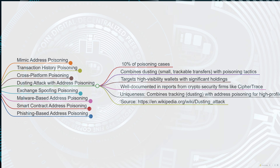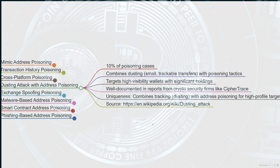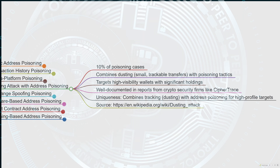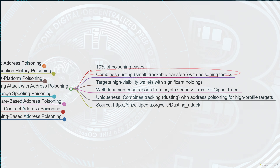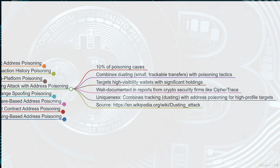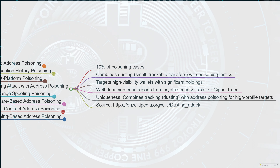There is also dusting attacks combined with address poisoning, making up around 10% of total address poisoning incidents. A CypherTrace report notes these combined tactics are more effective against wallets with higher visibility on the blockchain, such as those with significant holdings or transactional frequency. Dusting attacks send small amounts of crypto dust to random addresses to track wallet activity or de-anonymize users. When combined with address poisoning, scammers send dust from a lookalike address so users might interact with the fake address in future transactions.